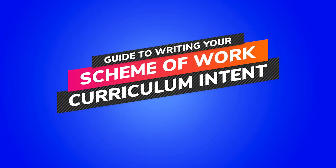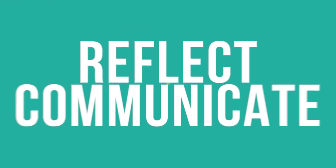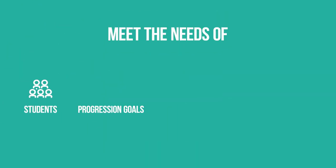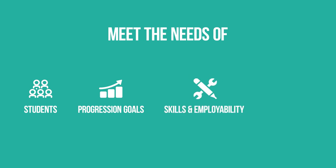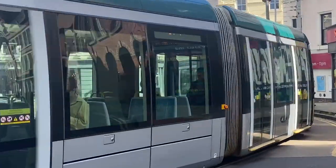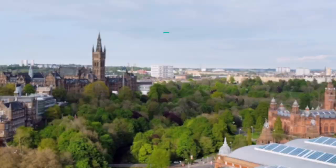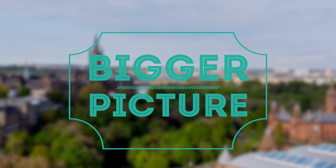A quick guide to writing your Scheme of Work Curriculum Intent. The Scheme of Work Curriculum Intent statement is an important method for you to reflect and communicate how you've anticipated, designed and sequenced your curriculum to meet the needs of your students, their progression goals, the local skills and employability need, and the qualification. It's about what makes your institution and your curriculum unique to the city, the communities and the people you serve, and the aspirations and high expectations we have of all of our students. It's about communicating the bigger picture.